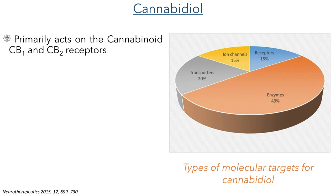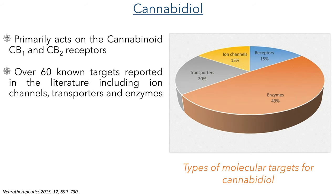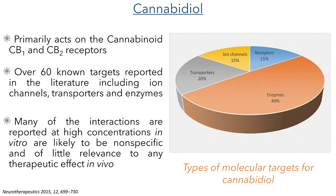The primary targets of CBD are the cannabinoid CB1 and CB2 receptors, but over 60 targets have been reported in the literature including ion channels, transporters and enzymes. However, many of the interactions which have been reported only occur at high concentrations in vitro and are unlikely to bind specifically in vivo, and therefore are unlikely to have any specific therapeutic effect.